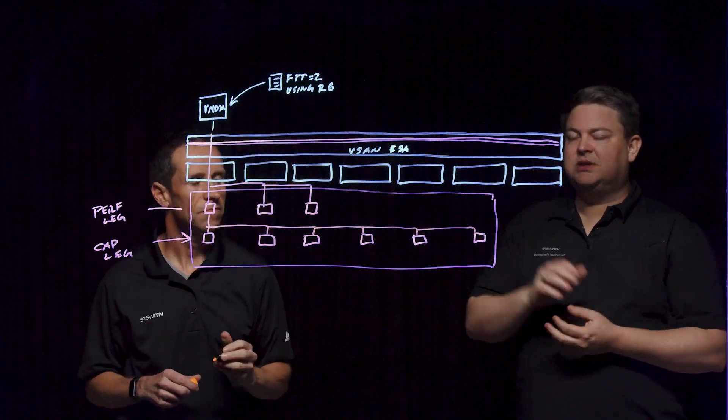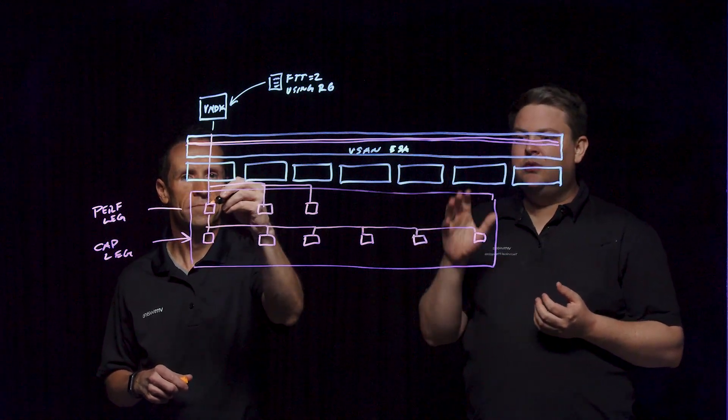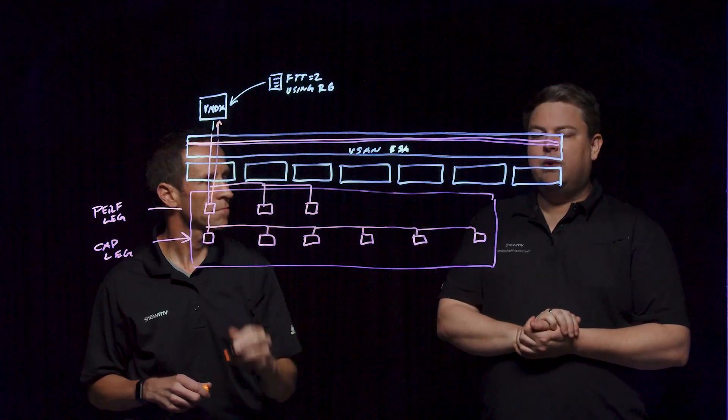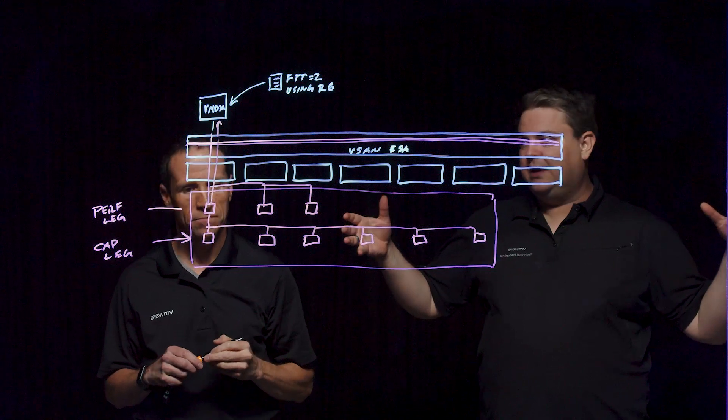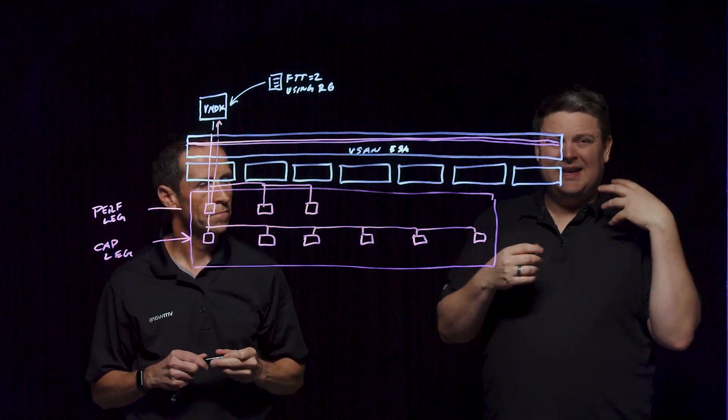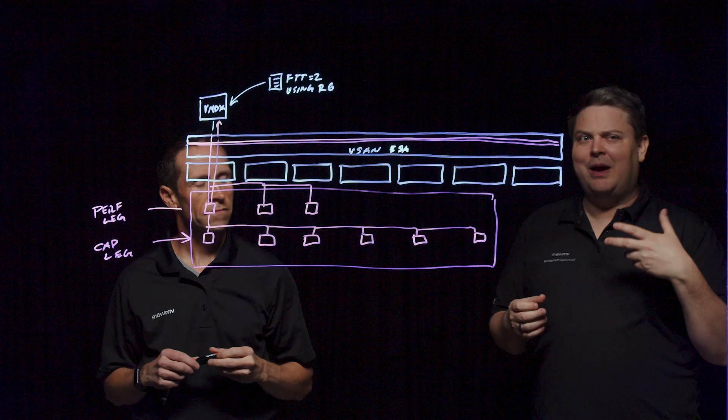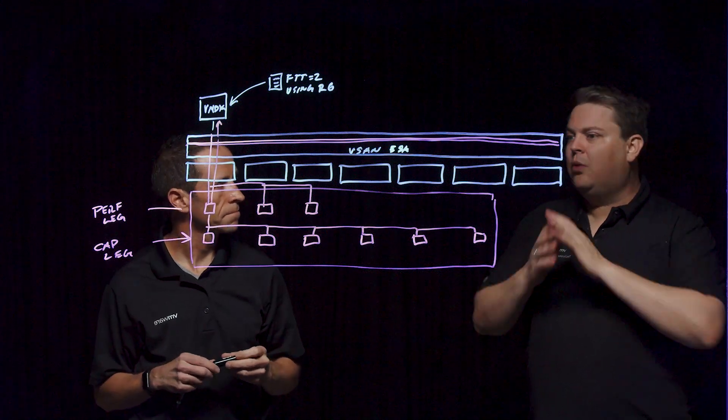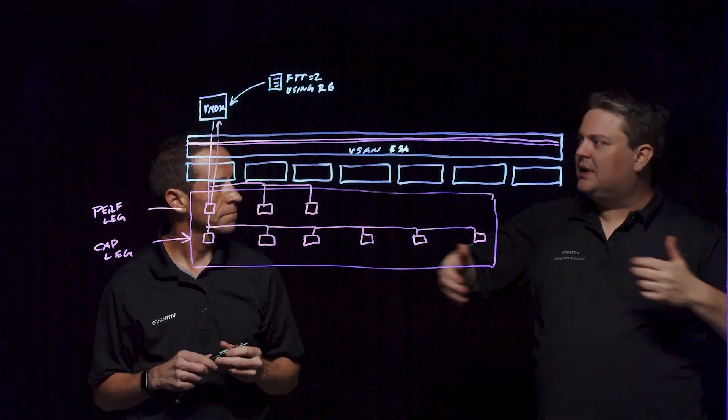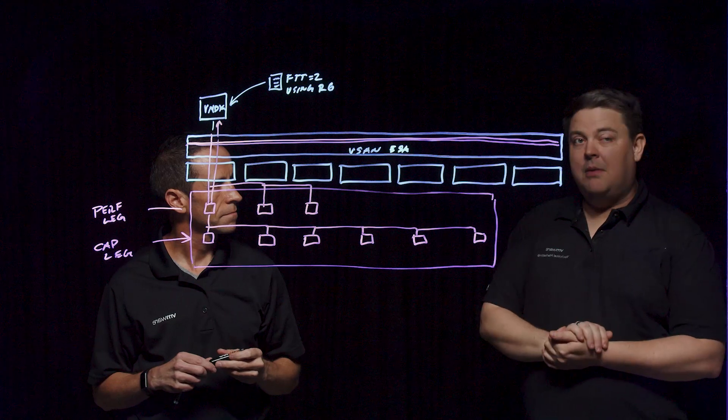Now, the initial write acknowledgement is going to happen in our performance leg. But as it moves to that capacity leg, we're going to do what's called a full stripe update. We're going to not have to look at the data and then do that rewrite, modify, calculate parity. We're able to write the data as a full stripe, so we can not have that overhead.